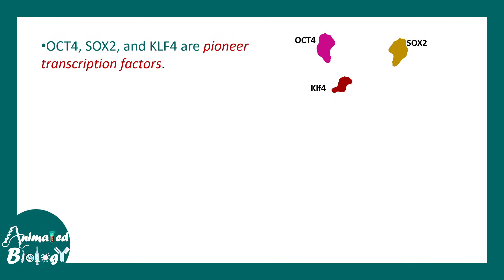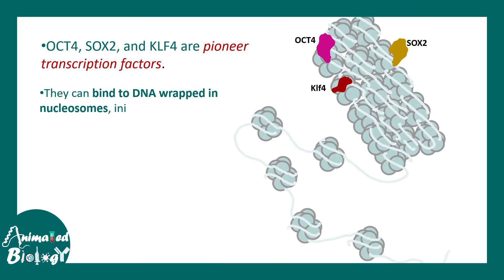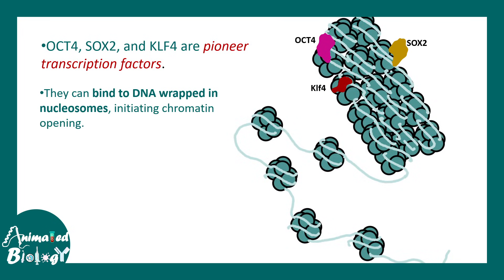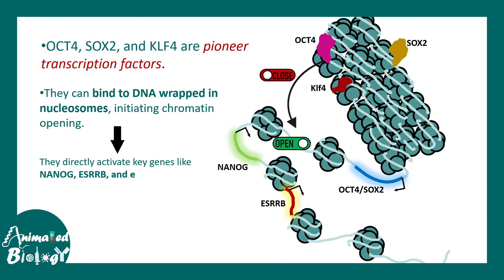Yamanaka factors are very different — they are known as pioneer transcription factors. They can access chromatin even when it is condensed, latching onto heterochromatinized regions and opening the chromatin, which leads to transcription of many genes. For example, KLF4, OCT4, and SOX2 give rise to transcription of NANOG, ESRRB, and endogenous SOX2 and NANOG genes.